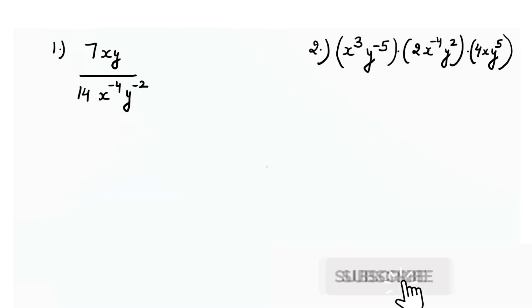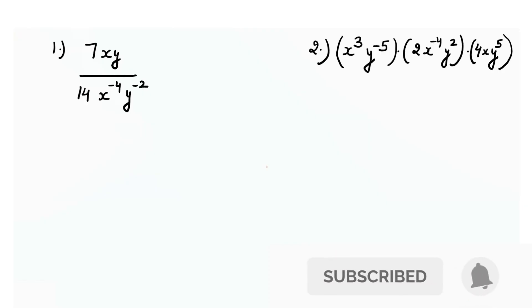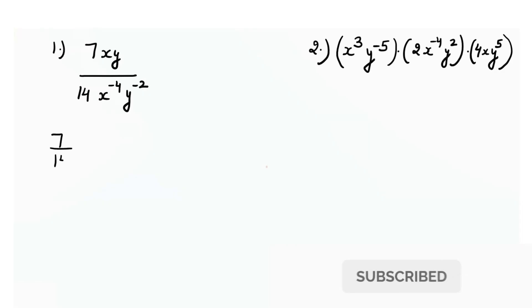In such questions, first we have to see if we have any numbers. We have the numbers 7 over 14 here. First we will solve them. I can simplify with the number 7, so I'll divide both numerator and denominator by 7 and get 1 by 2.